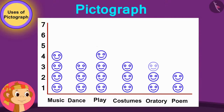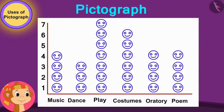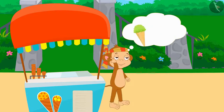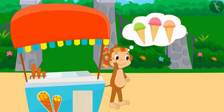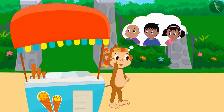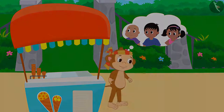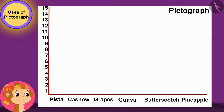Babban is now very happy to have learnt about the pictograph. He wants to sell new ice creams in his ice cream stall, but he is unable to decide which new ice cream will sell more. He thought, why not ask his customers to find out which ice cream they would like more. The next day, Babban made a pictograph.